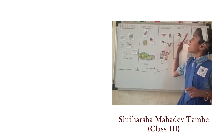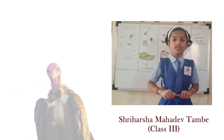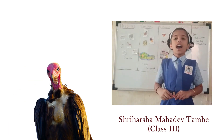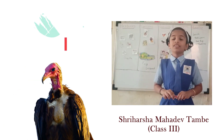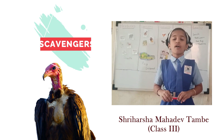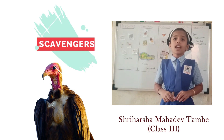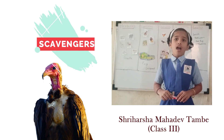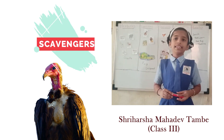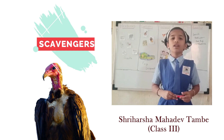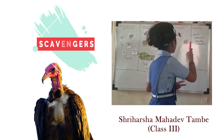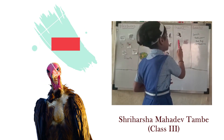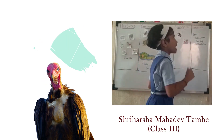The fourth category is Scavengers. They are the animals, birds, or insects that feed on dead and decaying matter. For example, vulture, dog, etc.